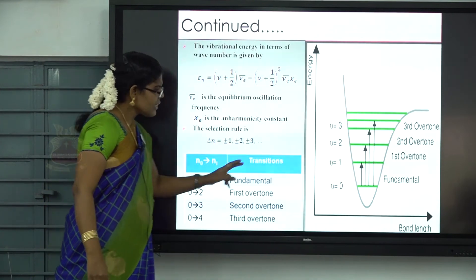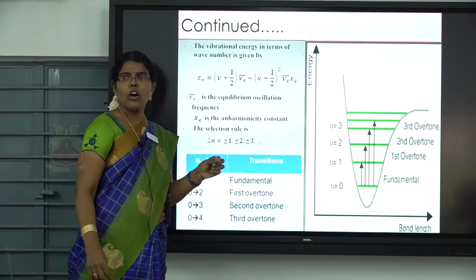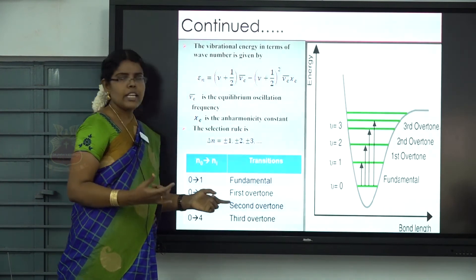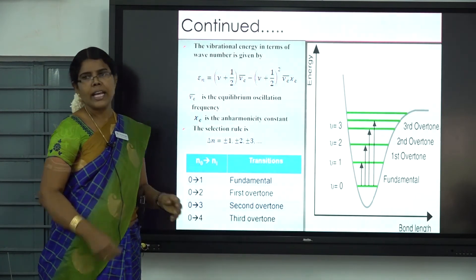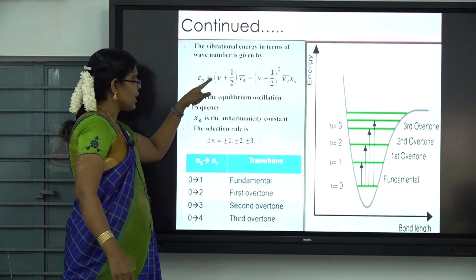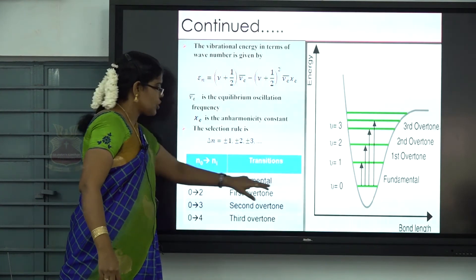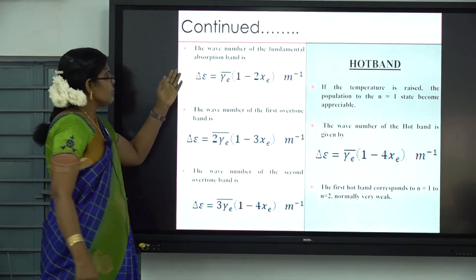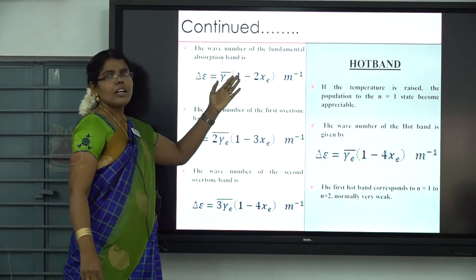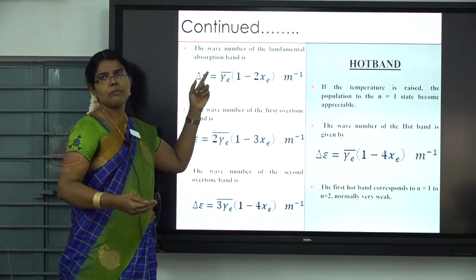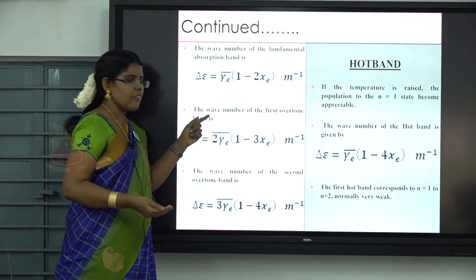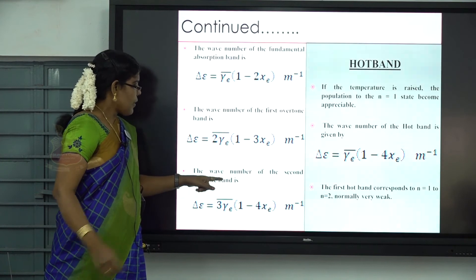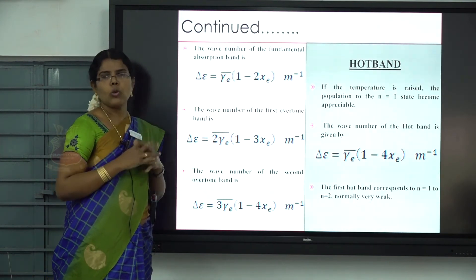Next, we calculate the frequency of the fundamental band, first overtone, and second overtone vibrational spectral lines. Applying the selection rule to the energy equation, we obtain the wave number of the fundamental absorption band, the wave number of the first overtone band, and the wave number of the second overtone band.